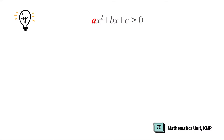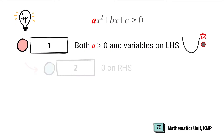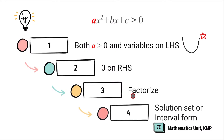This is a general idea on how to solve quadratic inequalities. You may use your own way, but you need to show the graphical approach. First, make sure that a is positive and all the variables are on the left-hand side, so you're going to use the smile graph. Second, make sure that 0 is on the right-hand side. Next, factorize your quadratic inequality. And last, the solution must be written in either solution set or interval form unless stated.